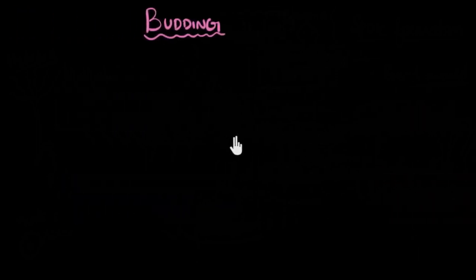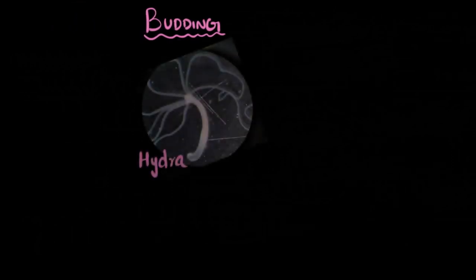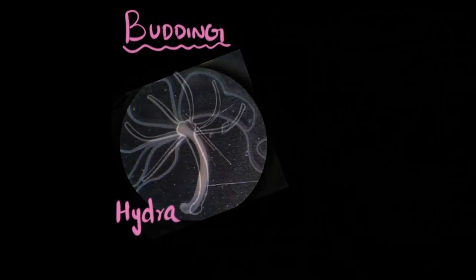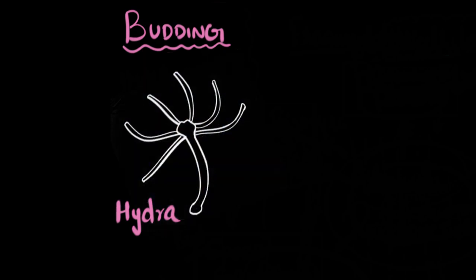So what's budding? Let's take an example to understand this. Take an example of a sea creature called Hydra. This is what it looks like under a microscope. Let me make a drawing of that. When this sea creature, Hydra, which is a multicellular organism, once it is mature and ready for reproduction, what we will see is a tiny outgrowth from a particular part of its body. This outgrowth is what we call a bud.